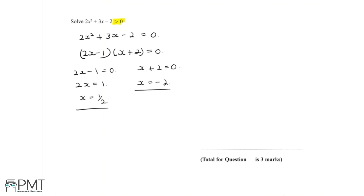When we have a quadratic inequality, it's always useful to draw a diagram. So we'll draw a quick sketch of 2x squared plus 3x minus 2 equal to zero, with x equal to a half and x equal to minus 2. The sketch doesn't need to be accurate — it'll just show us how the diagram should look. We can now see that the highlighted parts represent any points where 2x squared plus 3x minus 2 is more than zero.